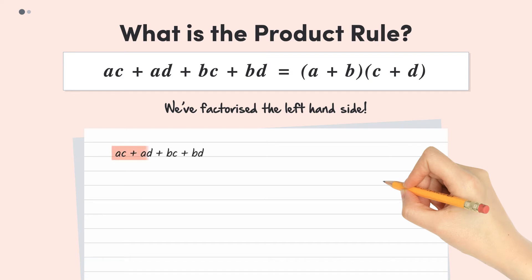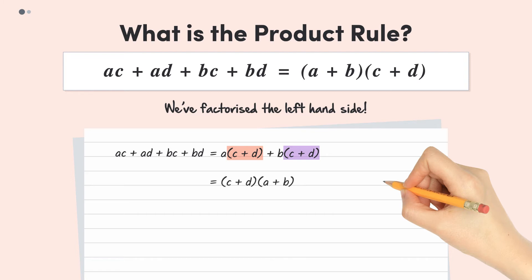The trick here is to factorise the first two terms and the last two terms separately. We can take a out as a factor of the first two terms, and b out as a factor of the last two terms. Now we can see that (c + d) is a factor of both these expressions. So let's factorise again, this time taking (c + d) out the front as the factor. The remainder of the first expression is a, and the remainder of the second expression is b. So we're left with (c + d)(a + b). Swapping the order of the brackets, we get (a + b)(c + d), which is what we were after all along.